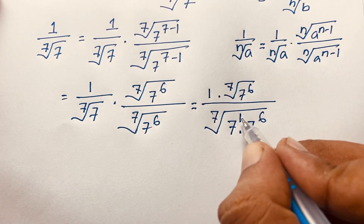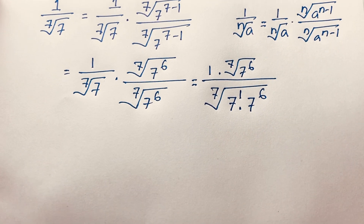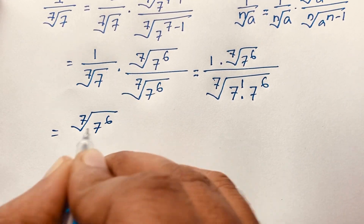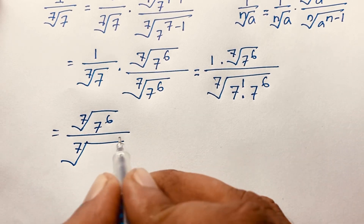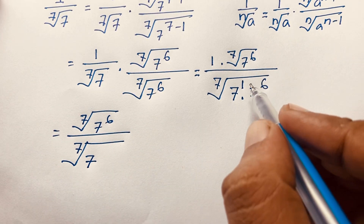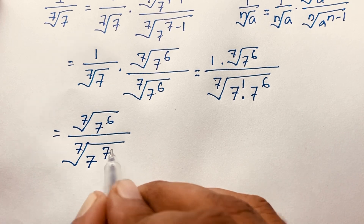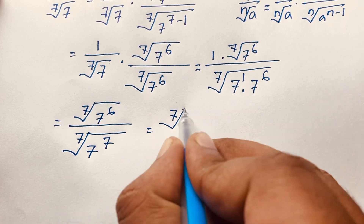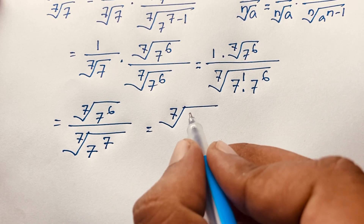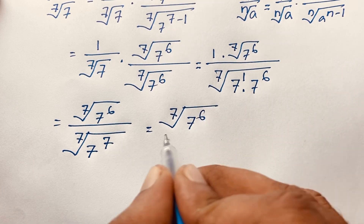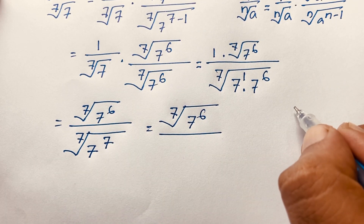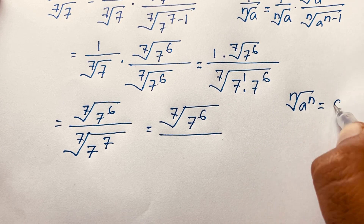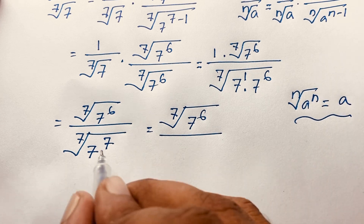We know the exponent is 1 in the numerator. I solved this step by step — the base is the same, so 1 plus 6 equals 7. Now, applying the law that n-th root of a to the power n equals a, this expression gives us the 7th root of 7 to the power 7, which simplifies to 7. So 7 is our final answer.